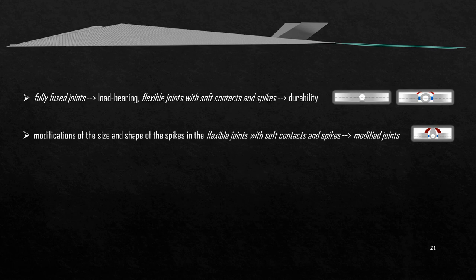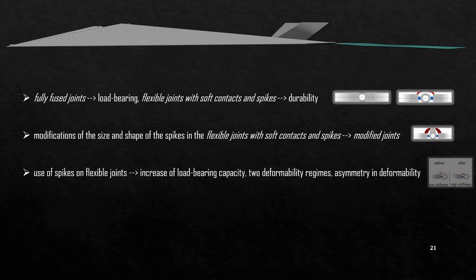Spikes increased the load-bearing capacity of the flexible joints and further provided them with two deformability regimes, high deformability and low deformability regimes. Spikes further resulted in an asymmetry in the deformability of the joints in the same and opposite direction of spikes activation.